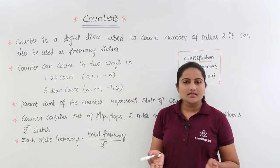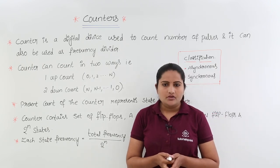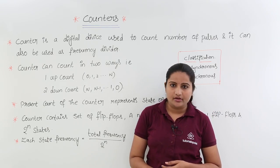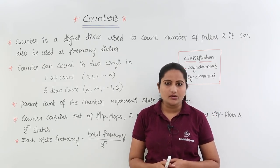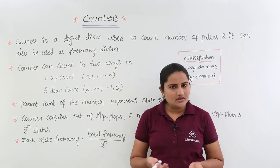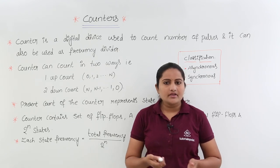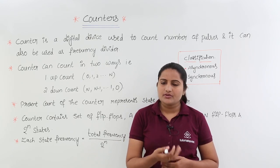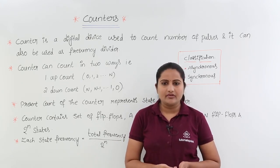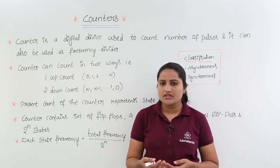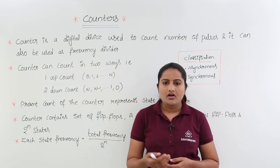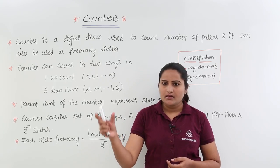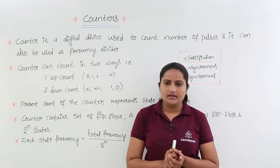Where are we using this up count and down count? In the next classes we are going to design up counter and down counter. For example, a simple use of up counter — we use this in EVMs, electronic voting machines, or in any shopping mall software.